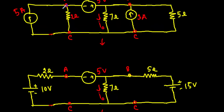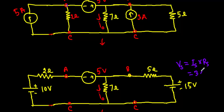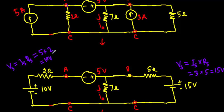The voltage source and resistance will be placed between terminals A and C where the current sources and resistances were connected, and similarly between terminals B and C. Converting the first one: V equals Is times Rs — with Is equal to 3 ampere and Rs equal to 5 ohm, I get a voltage of 15 volt. For the other: V equals Is times Rs — Is equals 5 and Rs equals 2 — giving a value of 10 volt.